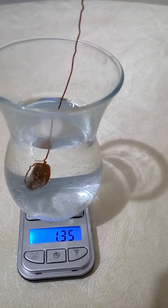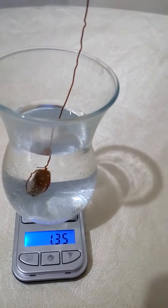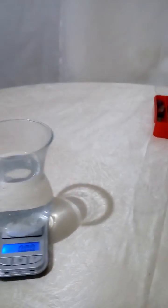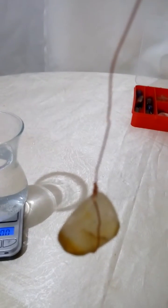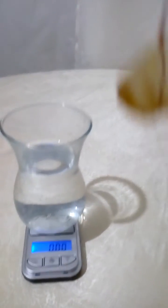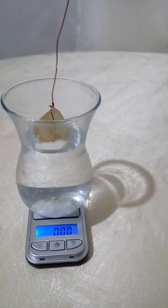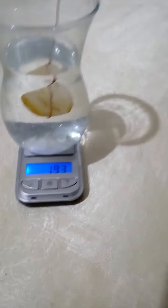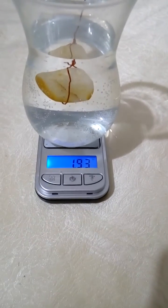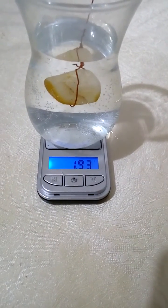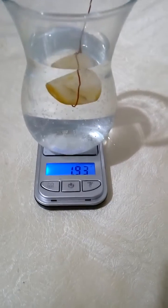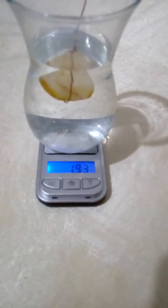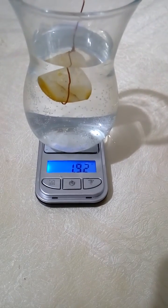Then we repeat the process with our second stone, sink it in the water and read the result. It's 1.90. We write the results on a piece of paper.